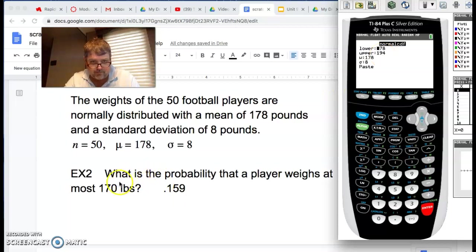So when we earlier we said, at most 170 means from the left would be negative infinity up to 170, so this is a spot where you would need to do the negative one second e99, that's your negative infinity, and now your upper bound is going to be 170, and that should give us the number we were looking for.